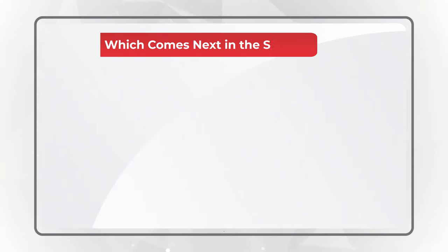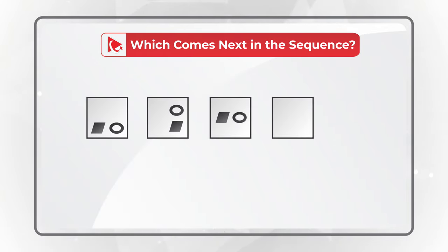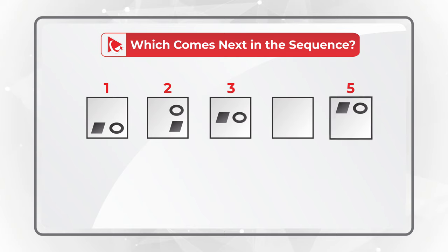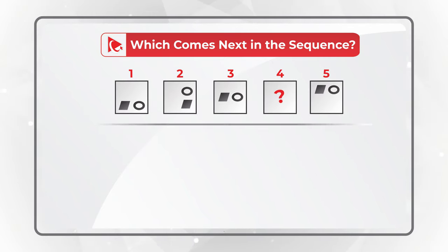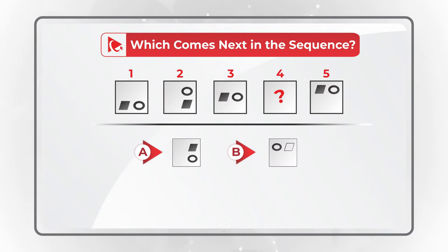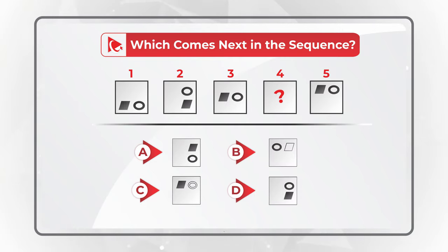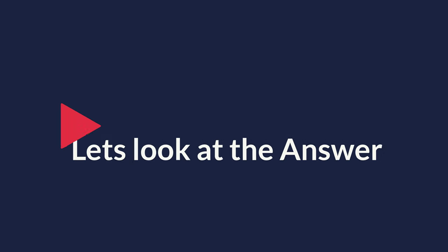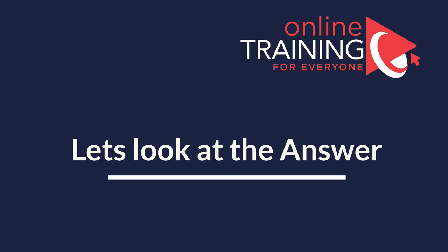I love this question because it makes you think. You need to determine which shape comes next in the sequence. You're presented with a series of five squares — squares 1, 2, 3, and 5 have smaller shapes inside, and you need to determine shape 4. You have four choices: A, B, C, or D. Give yourself time and look closely.